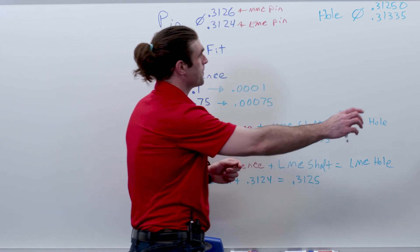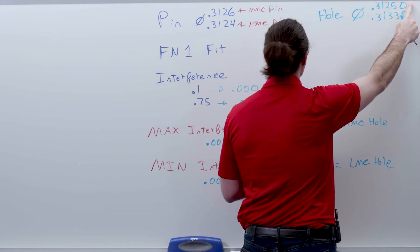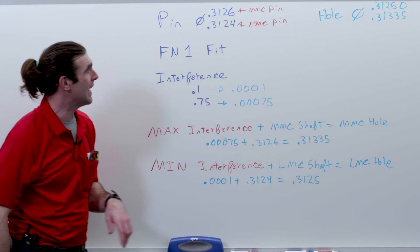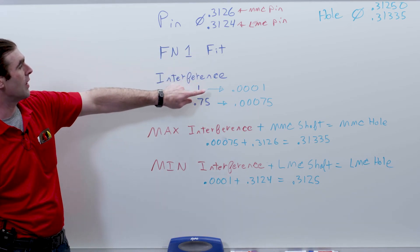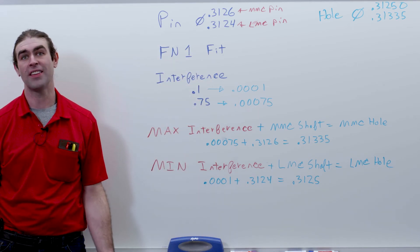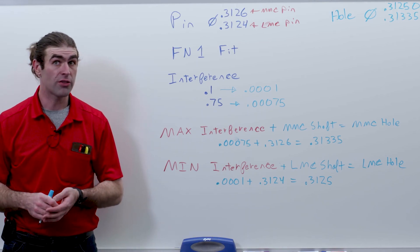If we subtract the MMC of the hole, the LMC of the hole from the LMC of the pin, this is a little more clear to see. You'll get this one-tenth of a thousandths number.